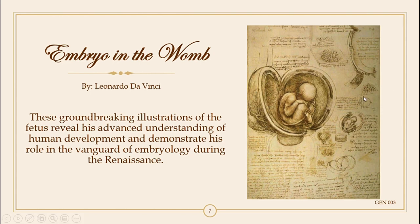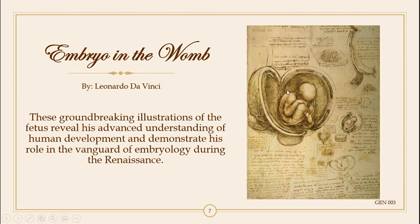It is thought that Da Vinci was the first person to draw a human embryo positioned accurately in the womb, along with the vascular system of the uterus, the cervix, and the vagina. Before Da Vinci's drawing, it was widely believed that the womb was divided into many chambers. But Da Vinci correctly drew the embryo in the womb — shown curled up in the now familiar fetal position, with legs crossed at the ankles and the umbilical cord clearly visible.